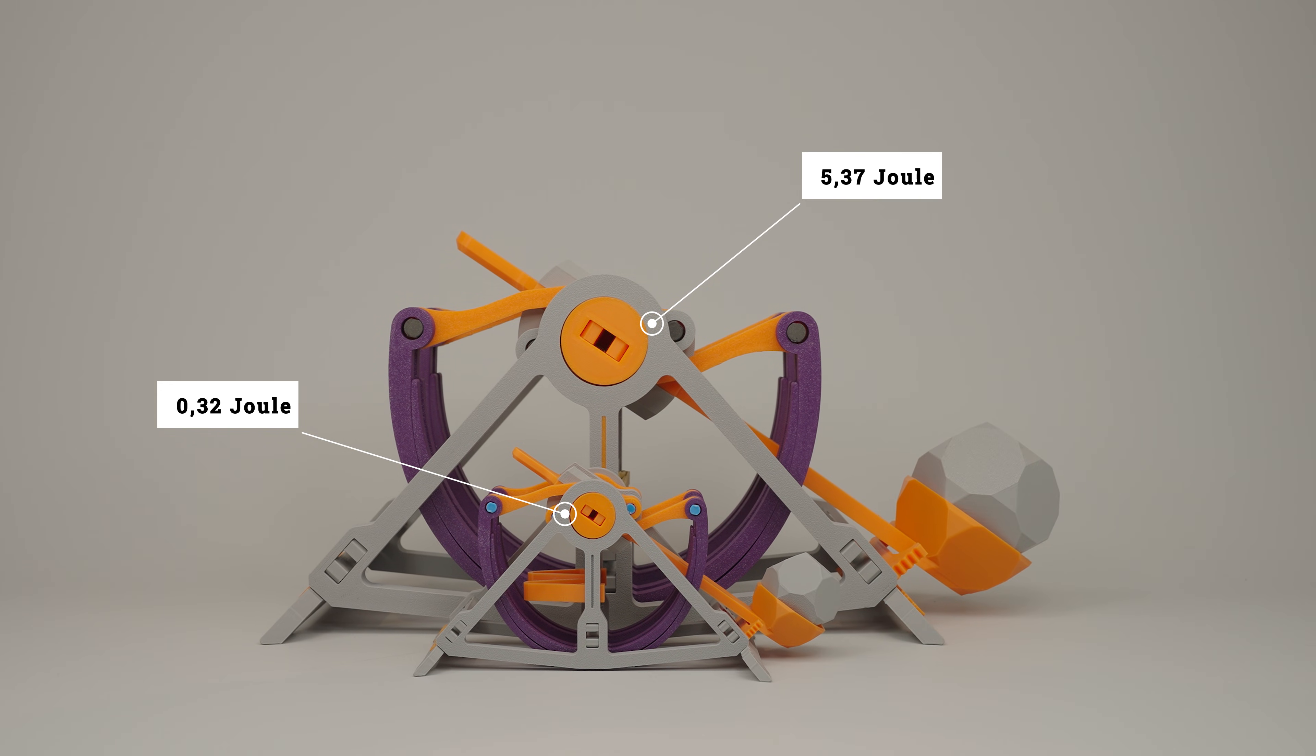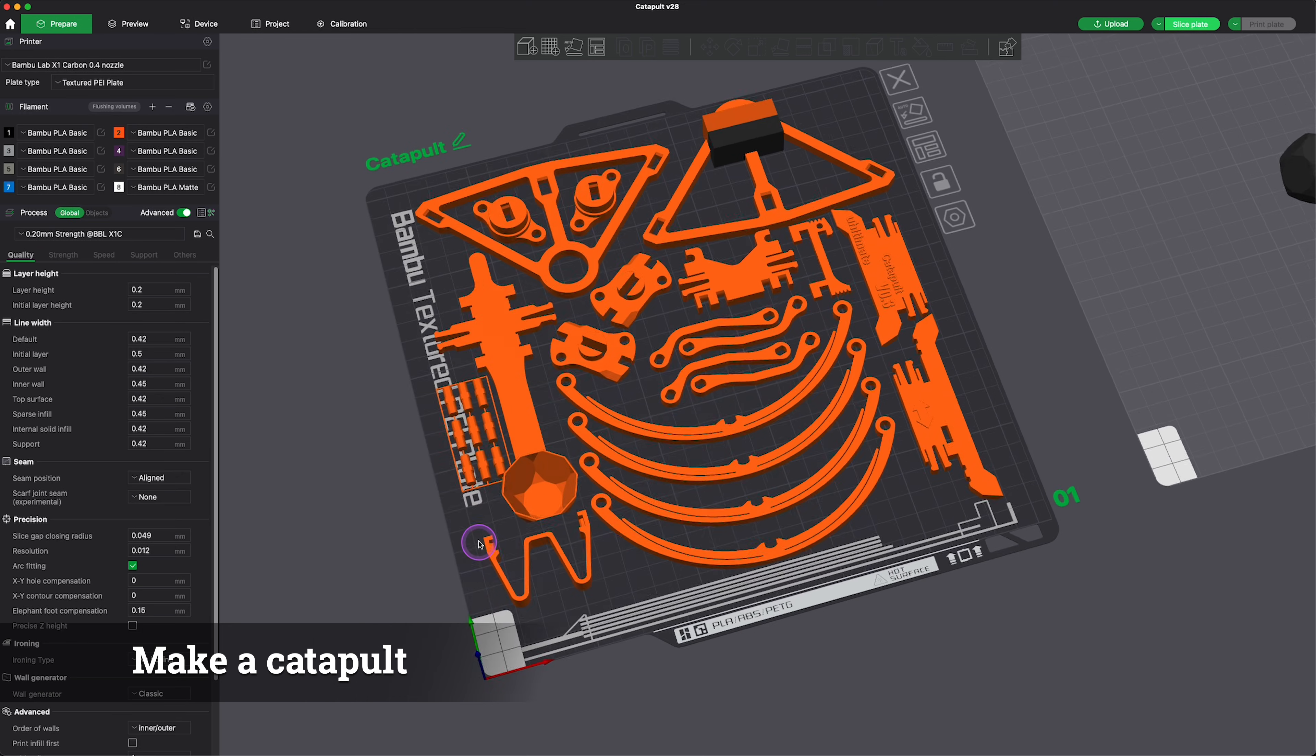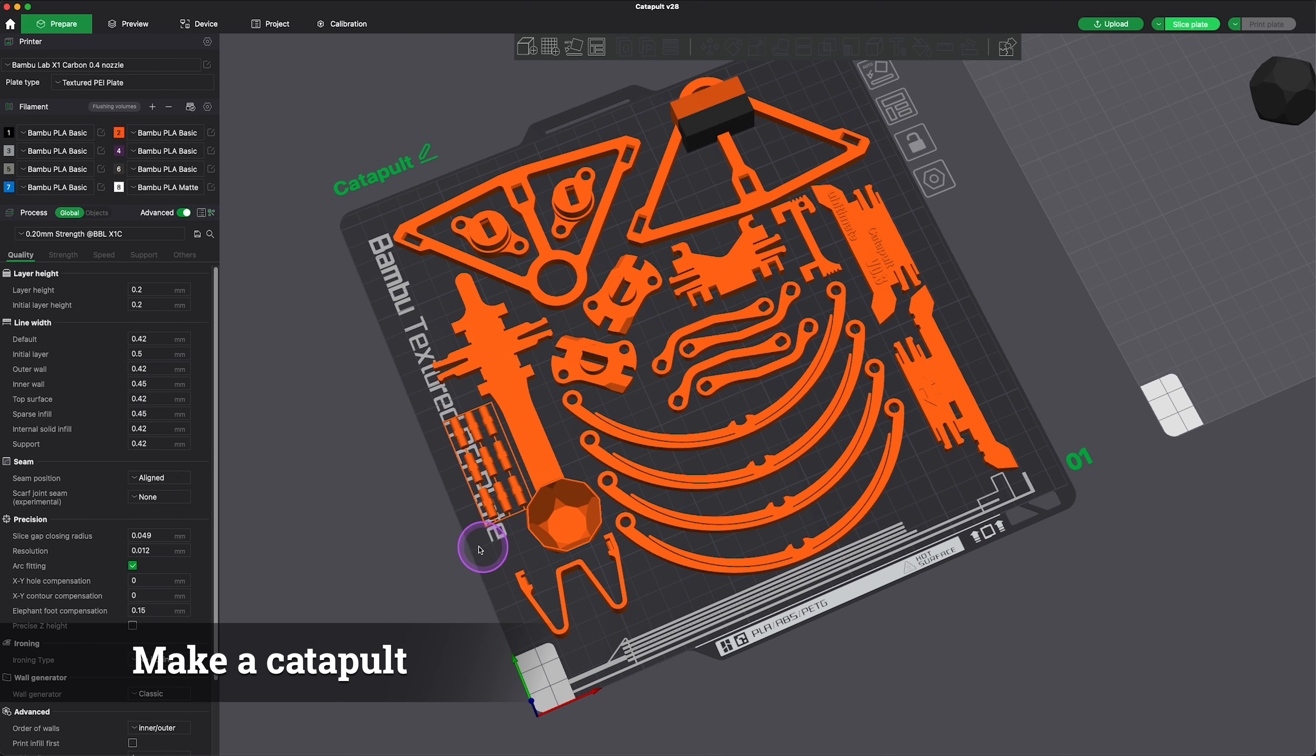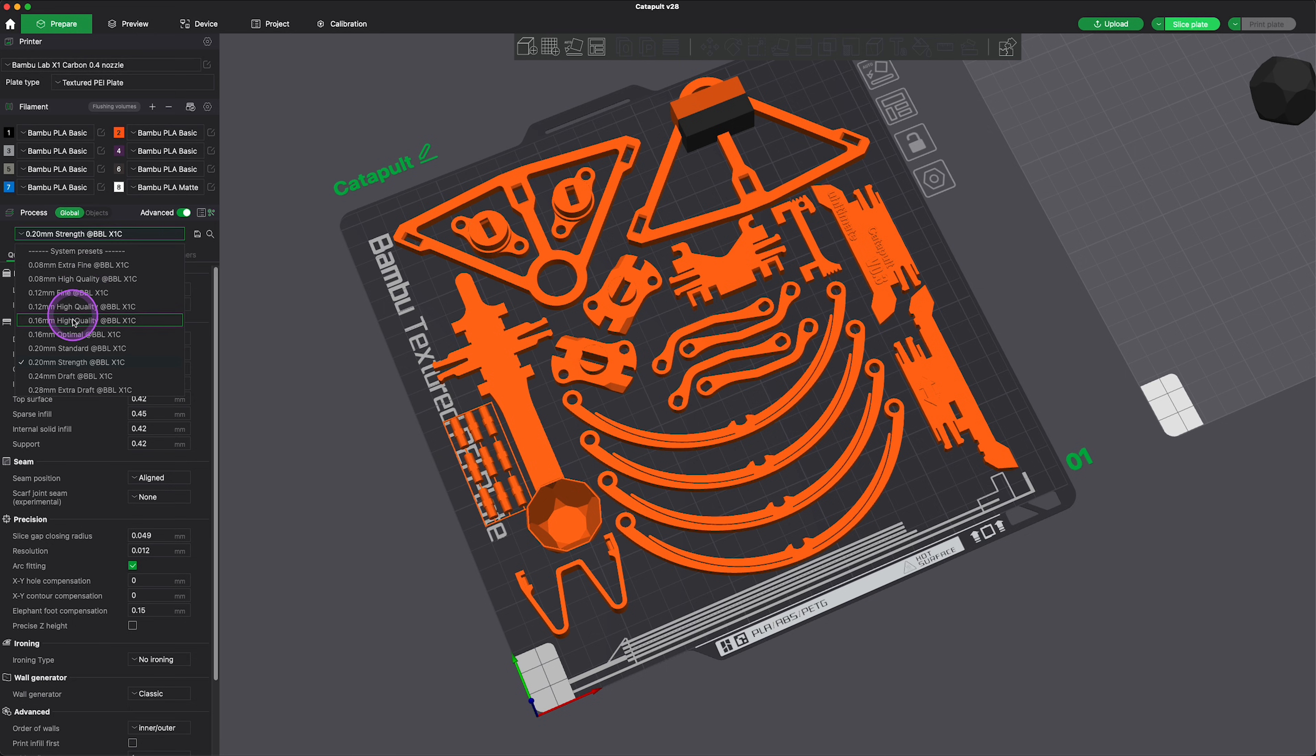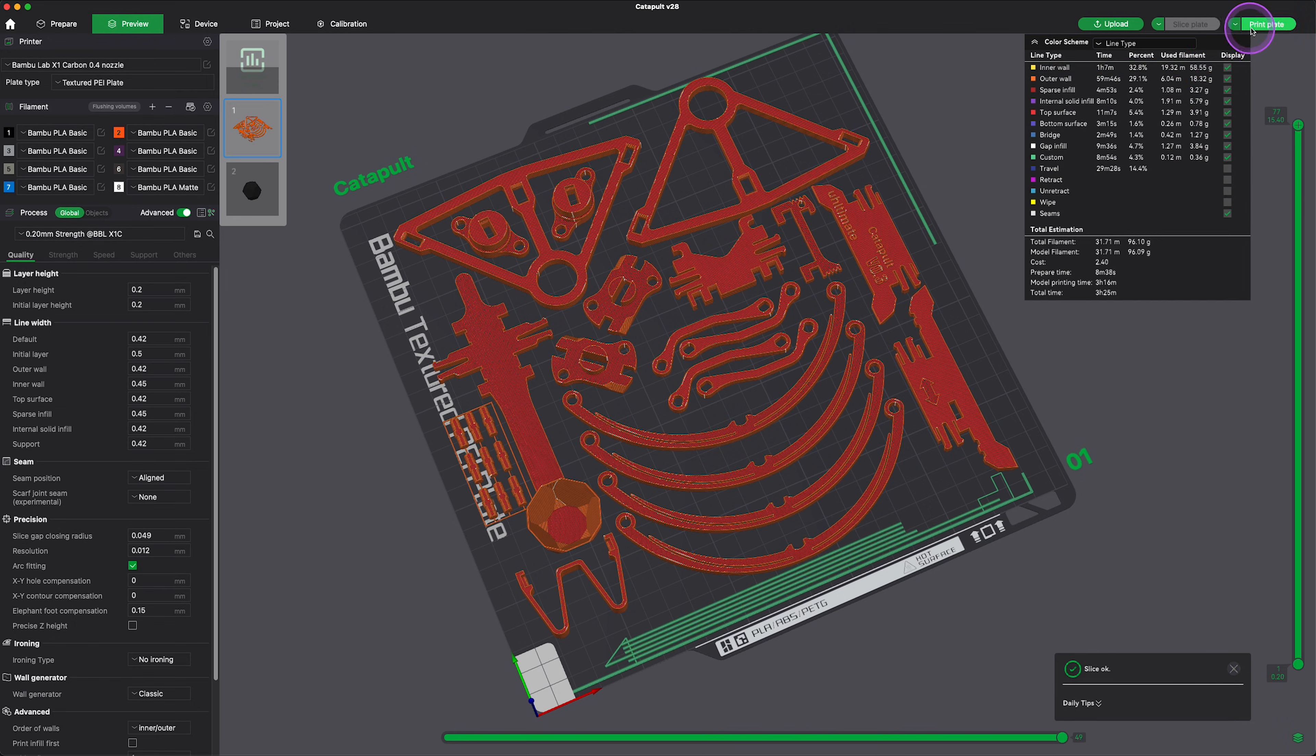All right, let's build your own catapult. First you've got to download the 3D print files. For the printing settings, make sure to use the strength profiles since they add more wall loops. Now let's start printing.